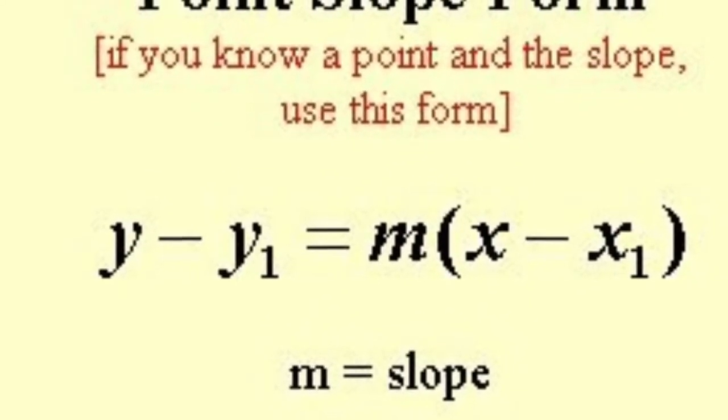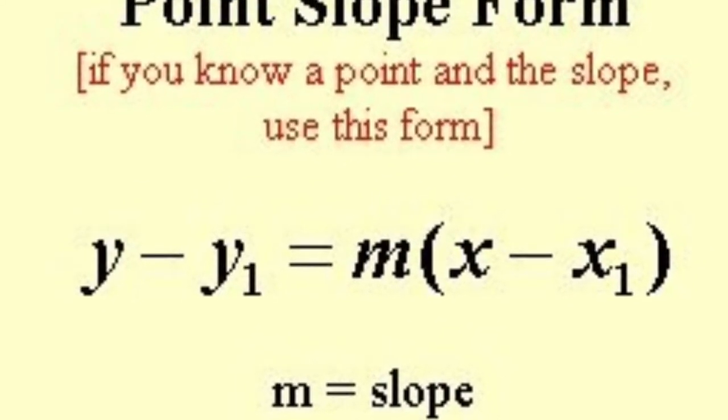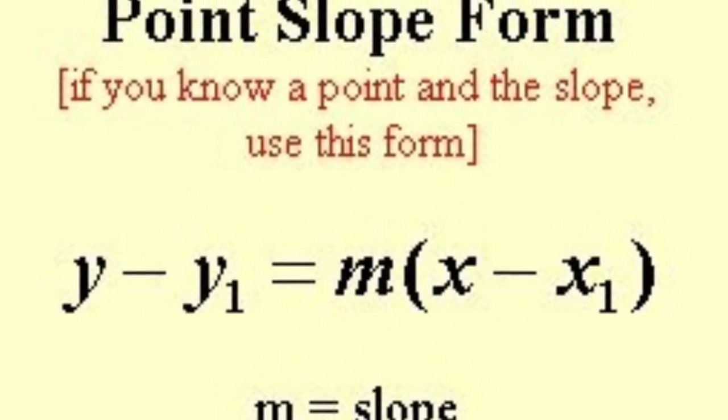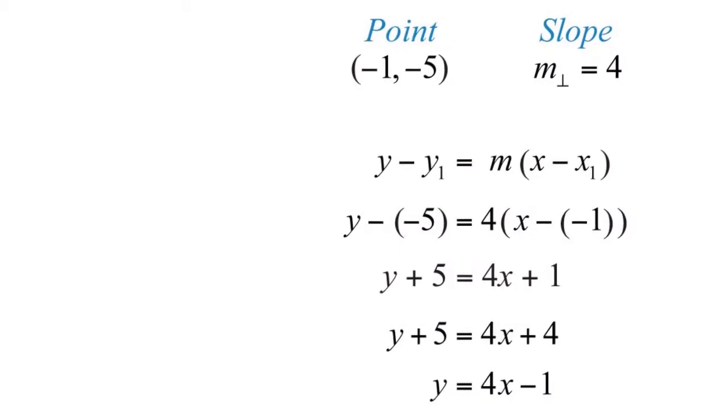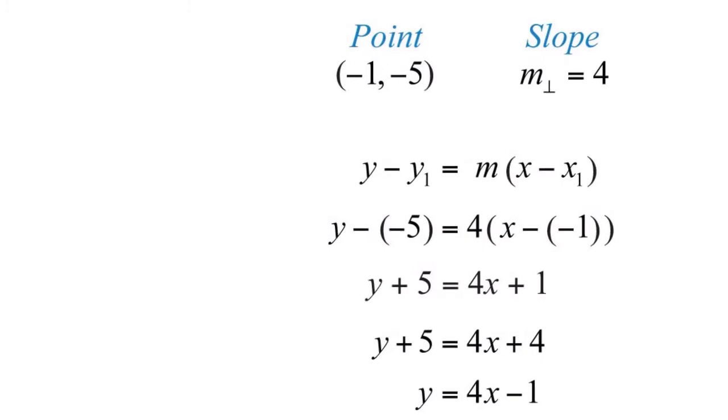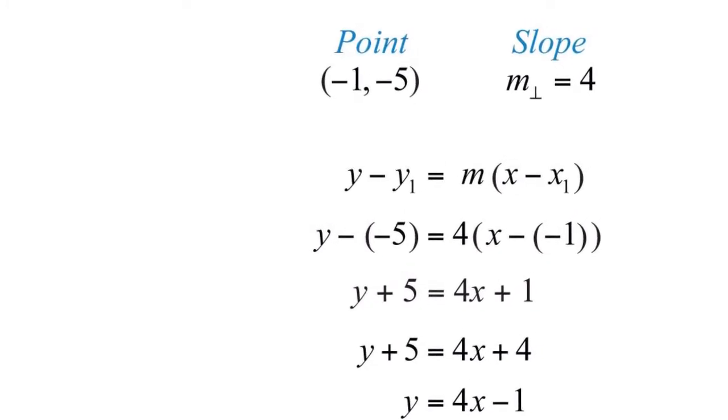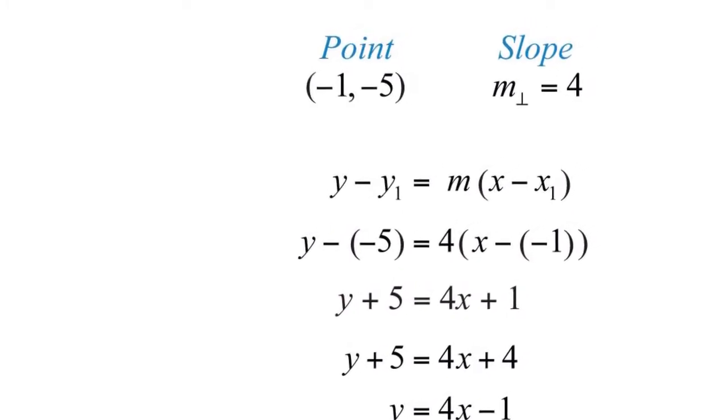In the point-slope form, y1 and x1 equals any given point on the line and m equals slope. As I was saying, the points, as you can see, are distributed into y1 and x1 in this equation.